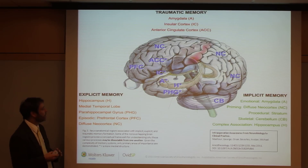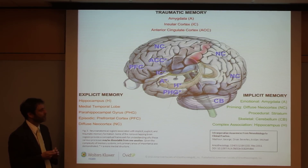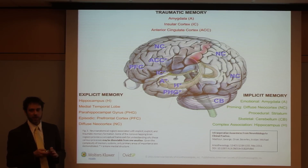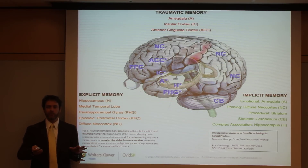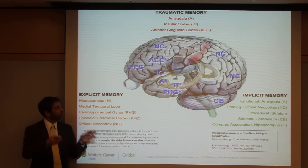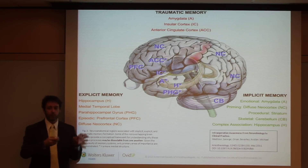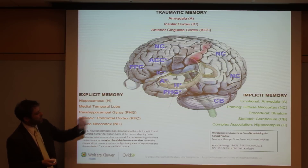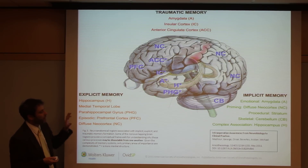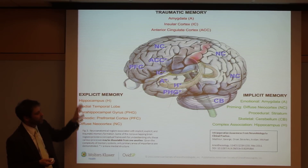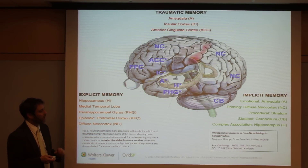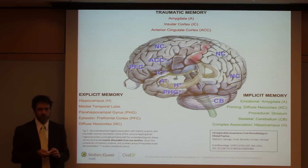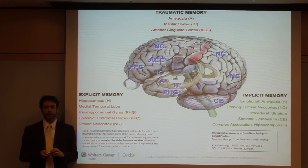Long-term potentiation has to occur, the memory needs to be coded, and there are various brain regions that tend to be involved in that process. So that was just a brief overview of the neurobiology of arousal, sleep, and memory, and how different forms of memory are dissociable from one another.